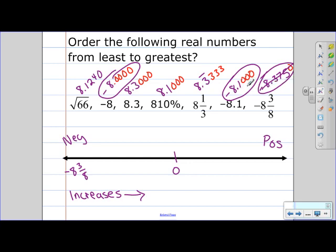Next we would have 1000. So that was negative 8.1. And then just negative eight.